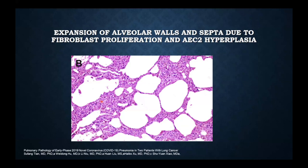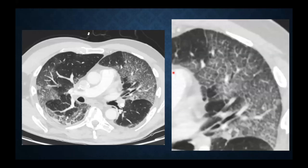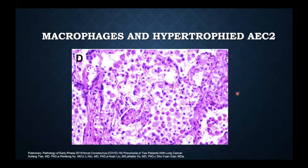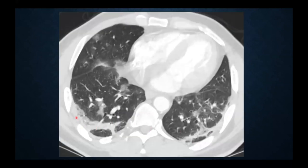The interlobular septa become expanded in patients with COVID-19 infection due to fibroblast proliferation and alveolar epithelial type 2 cell hyperplasia. Radiographically, we see lines superimposed on the ground glass opacity representing thickening of the scaffolding of the lung. The alveolar epithelial cell type 2 hyperplasia is interesting because it relates to surfactant production, and we see patients with excessive atelectasis on their chest CT scans and chest X-rays.